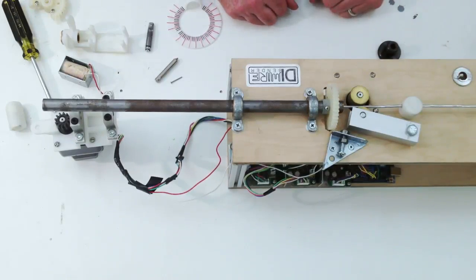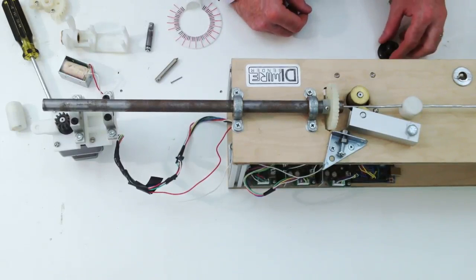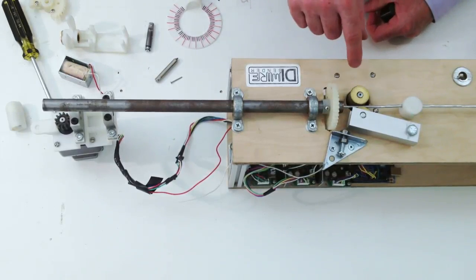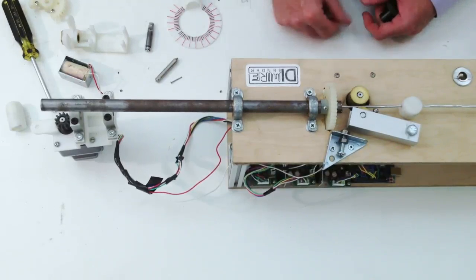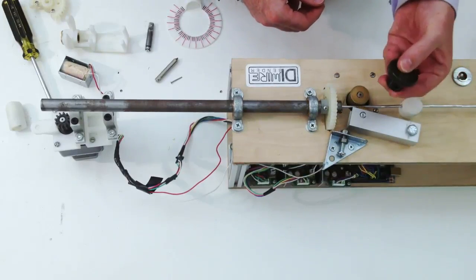Here this is all made out of custom parts but you could probably put something together with more off-the-shelf components, like we made this brass rod with the knurled face on it on our lathe but you can probably just buy a brass knob.